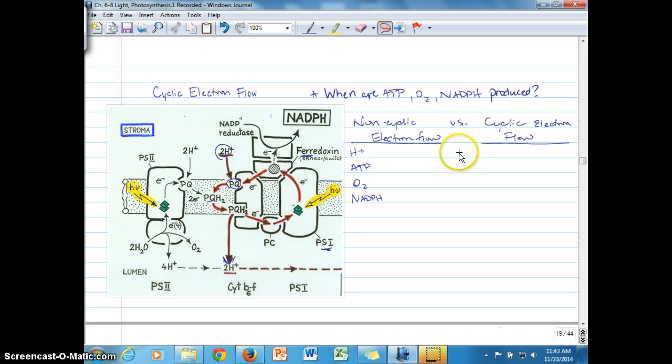To make a comparison between the two, in non-cyclic electron flow we do have hydrogen ions accumulating in the lumen, either from hydrolysis of water or from transport across the thylakoid membrane by plastiquinone. As a result, ATP synthesis will occur. Oxygen is produced when water is oxidized by Photosystem II. And at the end of non-cyclic electron flow, NADPH is produced.